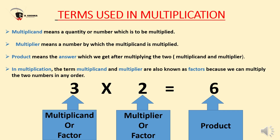Multiplicand and multiplier are also known as factors, because we can multiply two numbers in any order. For example, in 3 multiplied by 2 equals 6: here 3 is the multiplicand, which is also known as a factor; 2 is the multiplier, also known as a factor; and 6 is the answer, which is denoted as the product.